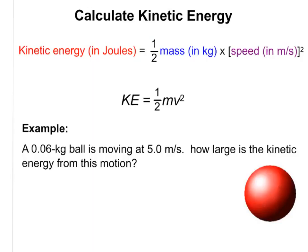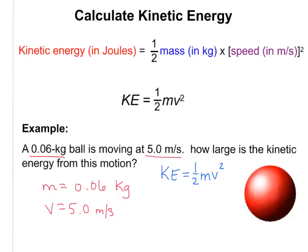Let's do an example. We have a 0.06 kilogram ball — that's about 60 grams — moving at 5.0 meters per second. How large is the kinetic energy from this motion? First, write down what we know: mass equals 0.06 kilograms, velocity equals 5.0 meters per second. Then write down the formula: kinetic energy equals one-half mv squared.